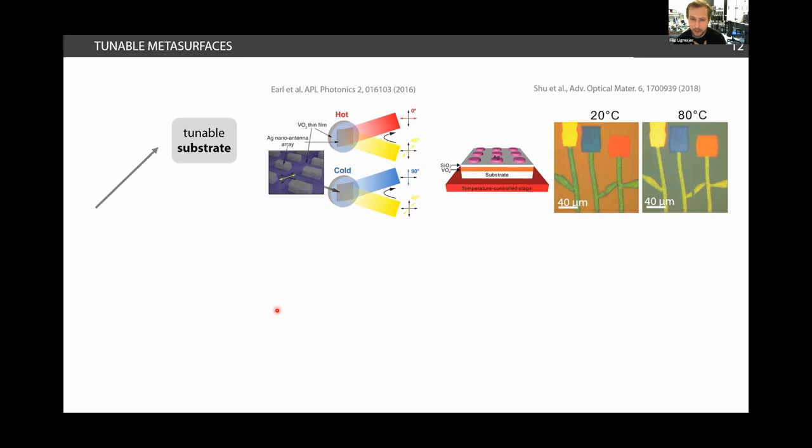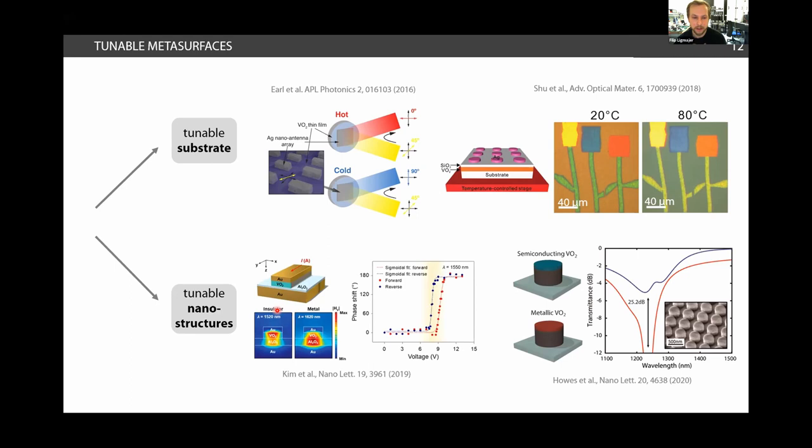Or you can use more advanced technique where you nanostructure the tunable material itself, like you can see in these examples. And of course this, your transition in VO2 is basically inside your building block, inside your nanostructure and everything is supposedly more straightforward. Of course this is not always the truth but again you can see very nice results of optical modulators or near-IR telecom modulators or some phase shifters for some further applications in metasurfaces.